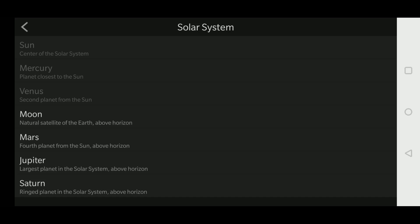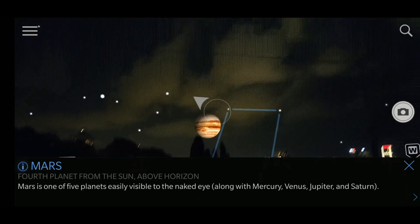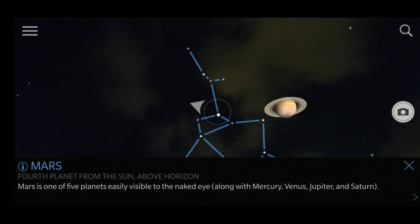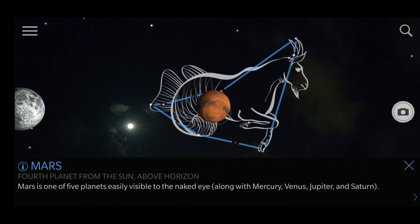The app has a search feature that allows you to quickly locate celestial objects. Here I'm searching for Mars. There's an arrow that points me where Mars is located so I can quickly locate it and get a bit more information about it.